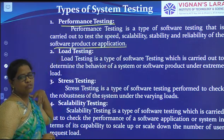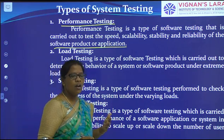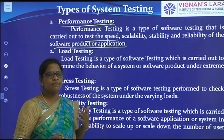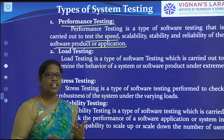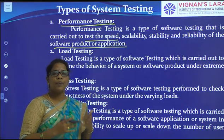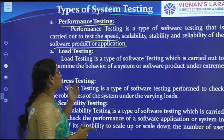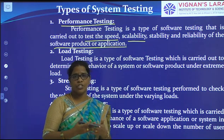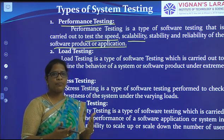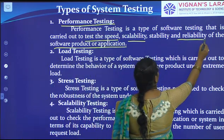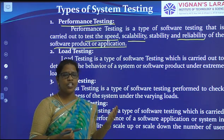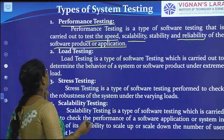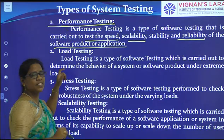How do we calculate the performance of a system? By checking how much speed it is taking to open the system, how much speed it is taking to shut down the system, how much speed it is taking to open different tasks. Scalability means how much space it is occupying when storing data. Reliability means if there is any external environment interacting with the system or software, what type of reliability it is giving. These come under performance testing. The second one is load testing.